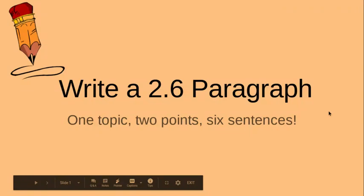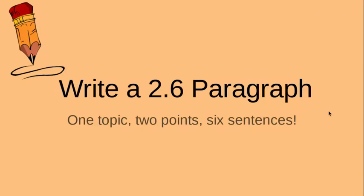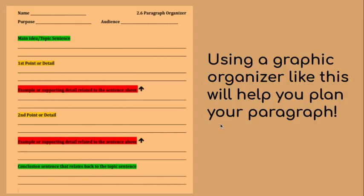Hey third grade Trojans, this is Miss G and today we will review and practice writing a 2.6 paragraph. What that means is you'll write about one topic, you'll have two points or two reasons, and you will have a total of six sentences. Today you can just watch and listen to this video or you can write your own paragraph with a prompt as we go along.